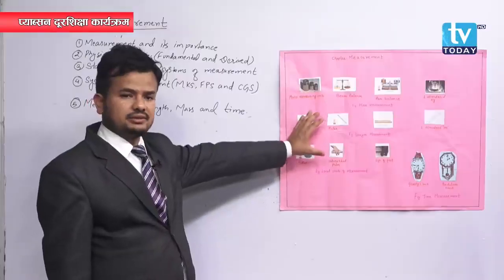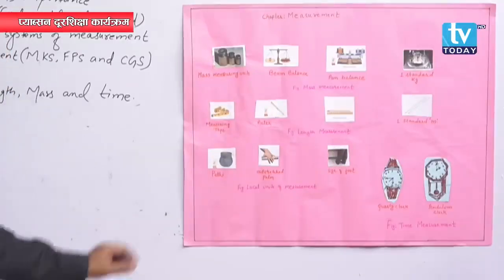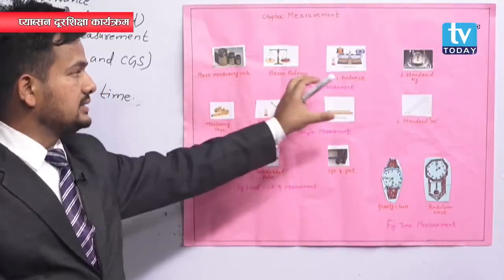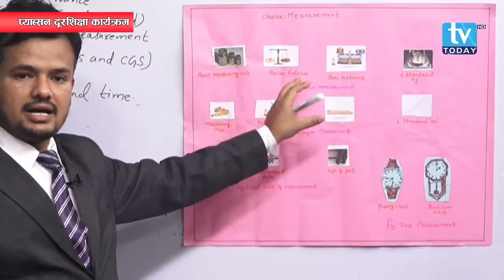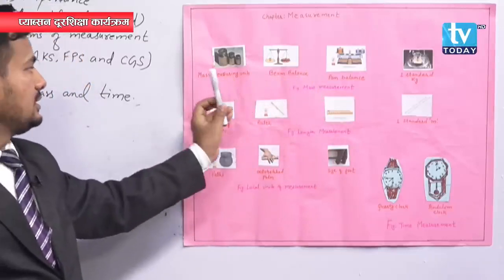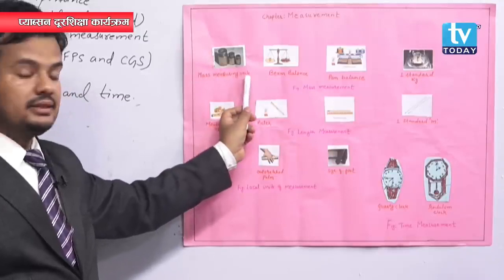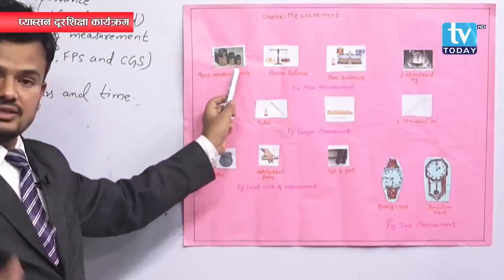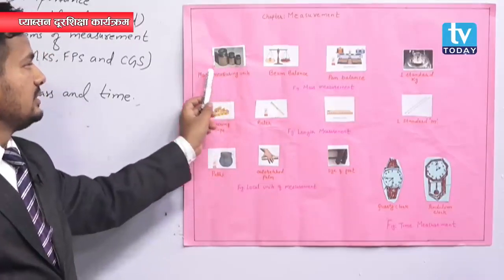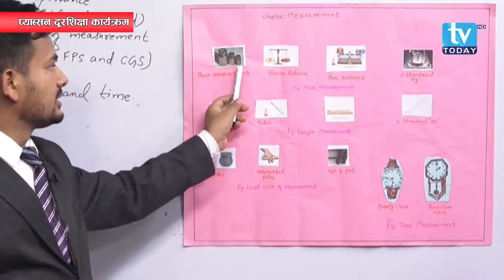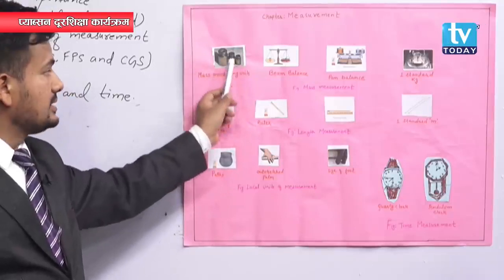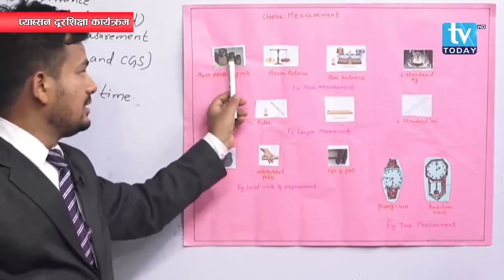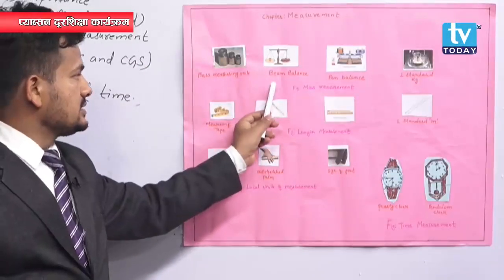If you observe this chart, you can see measurement of mass. There are different units and different devices that can measure mass. You have all seen mass-measuring units around you — in a grocer's shop you have seen one kg, half kg, 200 gram units. There are different types of mass-measuring units available and people use them commonly.